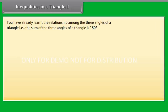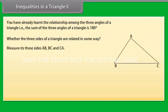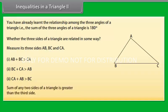Inequalities in a triangle 2. We already know that the sum of the three angles of a triangle is 180 degrees. We shall now study whether the three sides of a triangle are related in some way. Draw a triangle ABC and measure its three sides AB, BC, and CA. We observe that: AB plus BC is greater than CA; BC plus CA is greater than AB; and CA plus AB is greater than BC. Thus we conclude that the sum of any two sides of a triangle is greater than the third side.